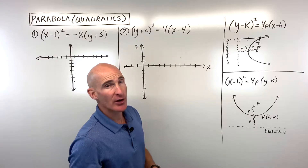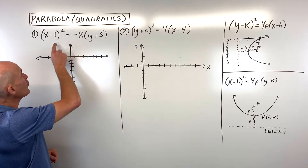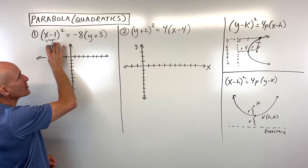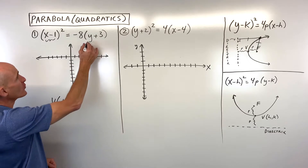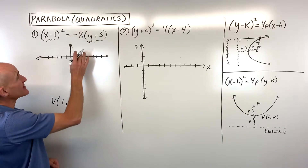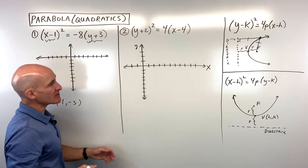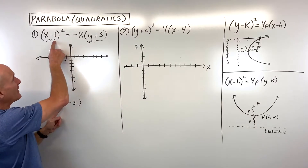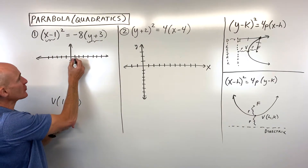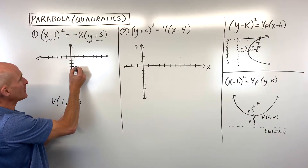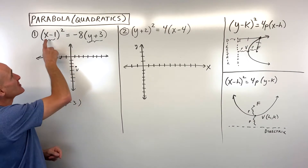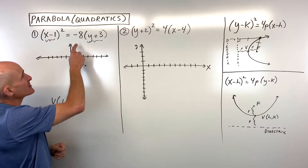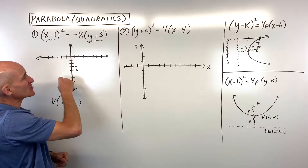Let's do the first example. We can identify the vertex — the number grouped with x is the x-coordinate, and the number grouped with y is the y-coordinate, but the signs are the opposite. So with x minus h and y minus k, our vertex is at positive 1, negative 3. Let's graph that. Notice this is x squared, so the parabola opens up or down. Because this value is negative, it's opening down.